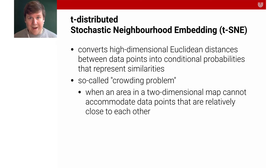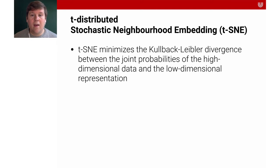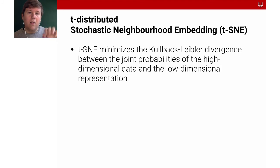T-SNE uses something called the Kullback–Leibler divergence, which is a measure of similarity of probability distributions. T-SNE also solves the so-called crowding problem — that is, when an area in a two-dimensional map cannot accommodate data points that are relatively close to each other. It minimizes the Kullback–Leibler divergence between the joint probabilities of the high-dimensional data and the low-dimensional representation, so that the same information contained in the high-dimensional data is also present in the low-dimensional distribution.